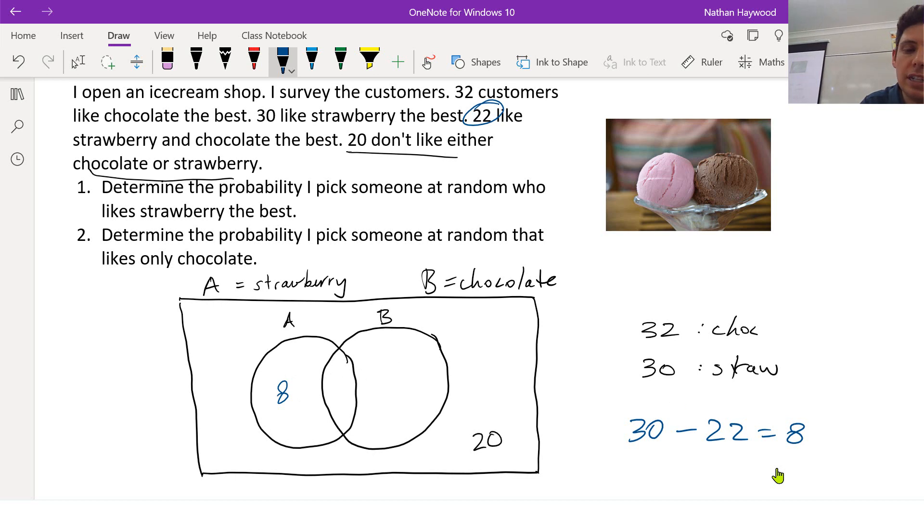There's 22 in the middle that like strawberry and chocolate. How do we figure out who likes only chocolate, not strawberry? So 32 like chocolate. So we're going to minus the 22 that like chocolate and strawberry. And you have 10 left over that only like chocolate. There is our Venn diagram.